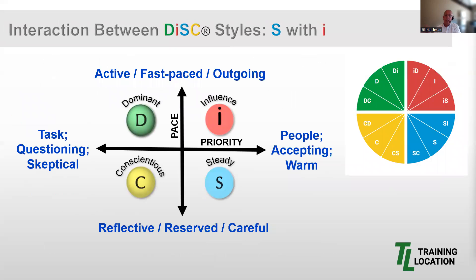Some of you probably noticed last week in our vlog that we expanded our discussion to show how a style within a quadrant can really vary quite a bit — there might be different types of S in the S quadrant. In the interest of time, I'm not going to revisit that this week. I've included the EverythingDISC model for your reference in the upper right corner of our slide. I encourage you to check out our website blog and look up interaction between styles — S with D, or I with C — for a good review of that more detailed approach.